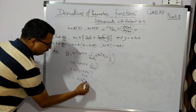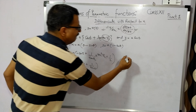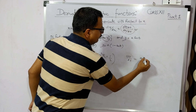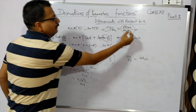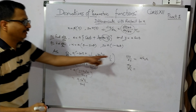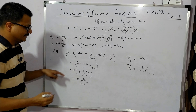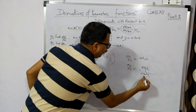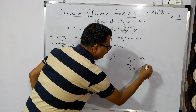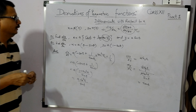यह आपका a·cos²t / sin t आएगा — यह dx/dt आ गया। अब dy/dt निकालेंगे तो a·cos t आएगा। दोनों को divide करने पर: dy/dx = (a·cos t) / (a·cos²t / sin t), जिसको solve करने पर tan t आएगा। यह आपका पहला question का answer है — note कर लीजिए।